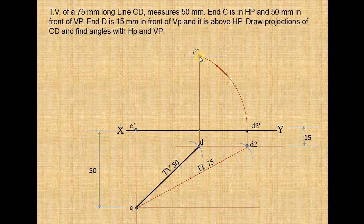Now draw the locus line at d dash. Now join the C dash and d dash. This is our required front view.